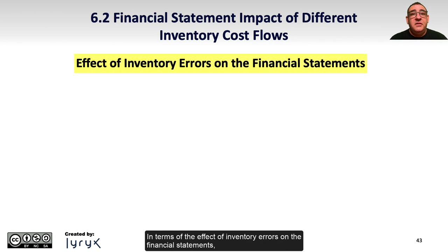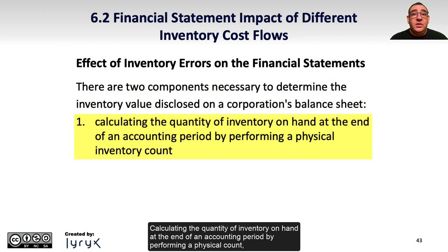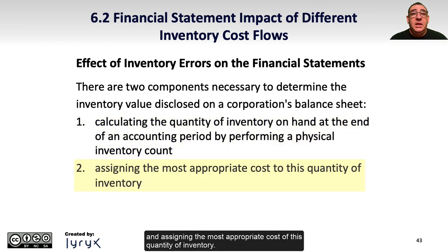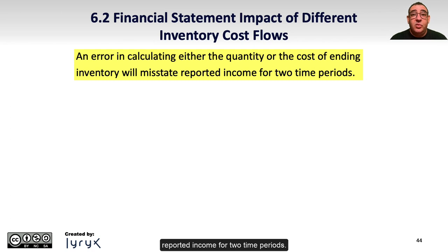In terms of the effect of inventory errors on the financial statements, there are two components necessary to determine the inventory value disclosed on a company's balance sheet: calculating the quantity of inventory on hand at the end of an accounting period by performing a physical count, and assigning the most appropriate cost to this quantity of inventory. An error in calculating either the quantity or the cost of any inventory will misstate reported income for two time periods.